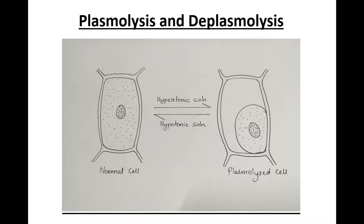When a plasmolyzed cell is placed in a hypotonic solution, the protoplasm usually regains its original shape and turgor due to influx of fluid from the surrounding, a process known as endosmosis. This opposite phenomenon whereby the protoplasm of a plasmolyzed cell regains shape and turgidity is known as deplasmolysis.